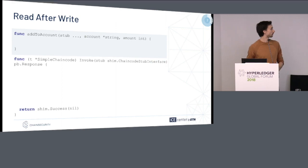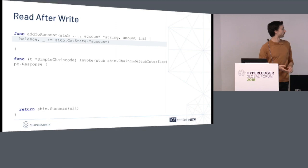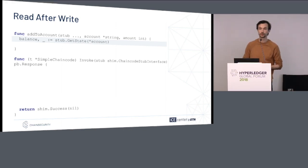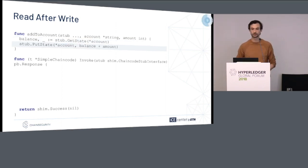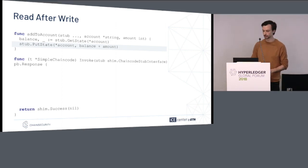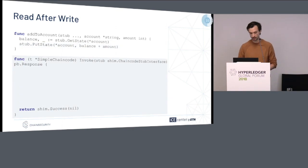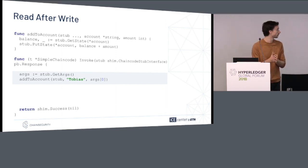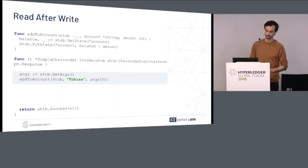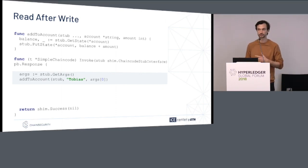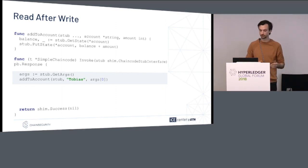We have the invoke function that is in every single chain code. It is the entry point of the smart contract. In our example we have a small bank, and banks handle accounts. One such functionality might be that they want to add some money to a certain account. First, with get state we retrieve the current amount of this account from the ledger, and in the next step we add the amount and write it back to the ledger. In the invoke function we first retrieve the arguments sent by the client — the person who invoked the transaction — and we take the first argument and assume it's an integer. I've left out a lot of boilerplate code such as serialization and deserialization. We want to add a certain amount given with the transaction to my account.